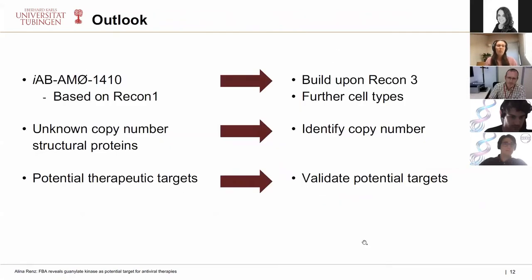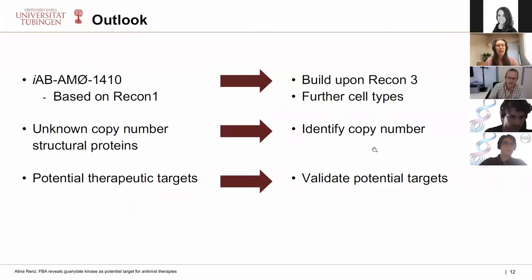To conclude, we need to look into further cell types. So far we worked on human alveolar macrophages, but SARS-CoV-2 infects many more cells, so we are working on building further models and incorporating the viral biomass function into them. We will have an eye on the copy number of structural proteins to decrease our target list, and currently guanylate kinase and further potential targets need to be validated in laboratory experiments. Thank you for your attention.